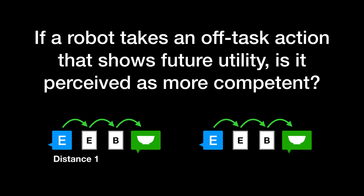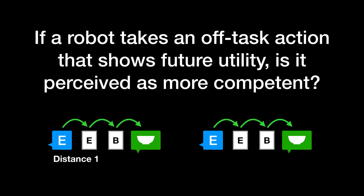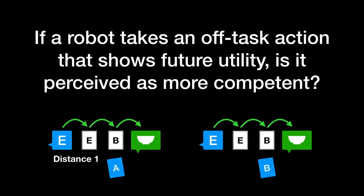To look at this, we made a new video identical to distance 1, except the next task label that gets swapped in on the whiteboard happens to correspond to the box that the robot detours to. We call this the payoff video.